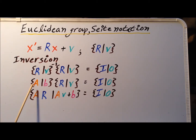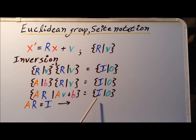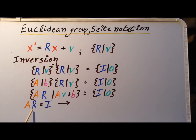We get that the product of {A | B} on {R | v} is going to be {AR | AV + B}, which we obtained from the closure property. Now we use this equality in two steps, breaking it into two equations. The first equation: A times R must equal the identity matrix I. Since A and R are each 3×3 matrices and I is the 3×3 identity matrix, by definition A must be the inverse of R. So that gives us A equals R to the minus one.